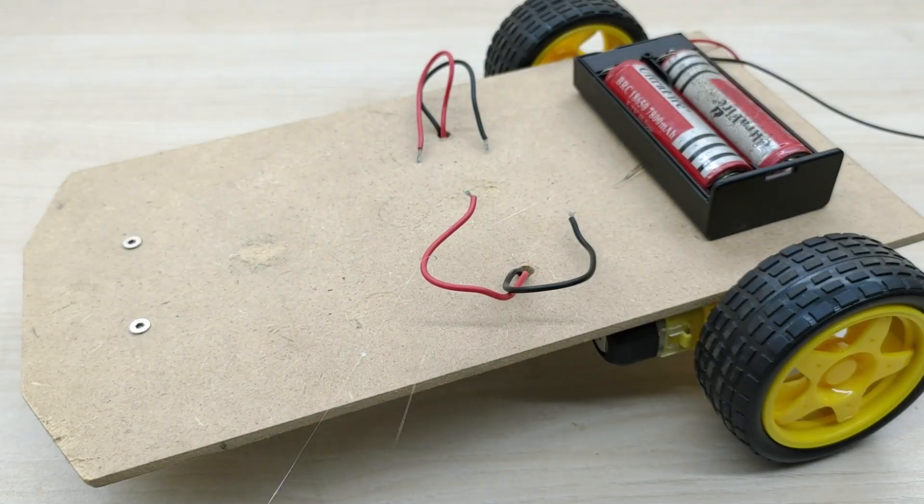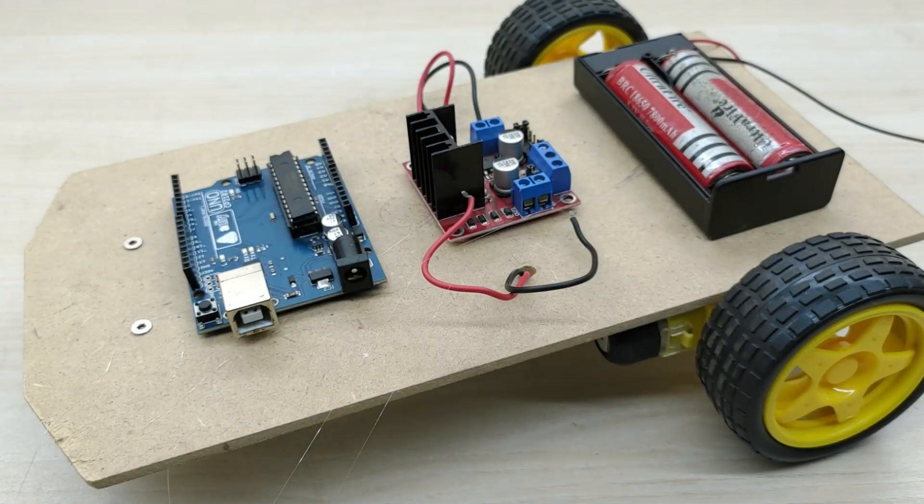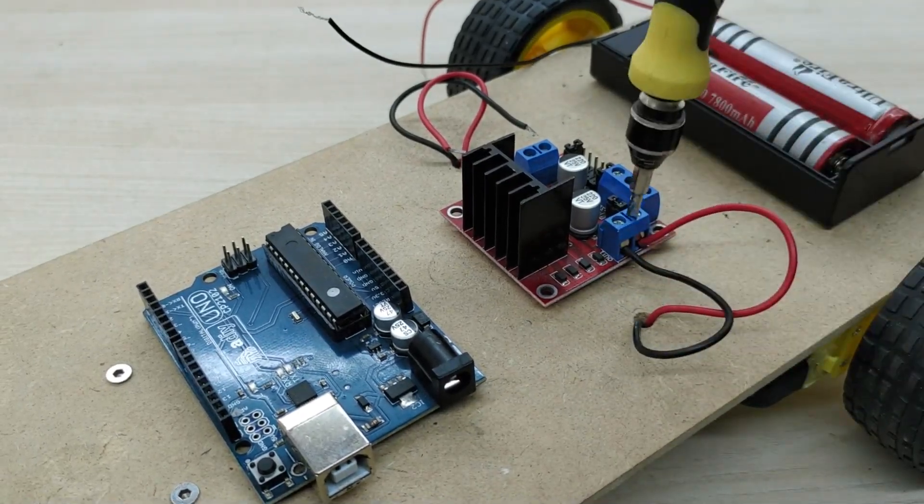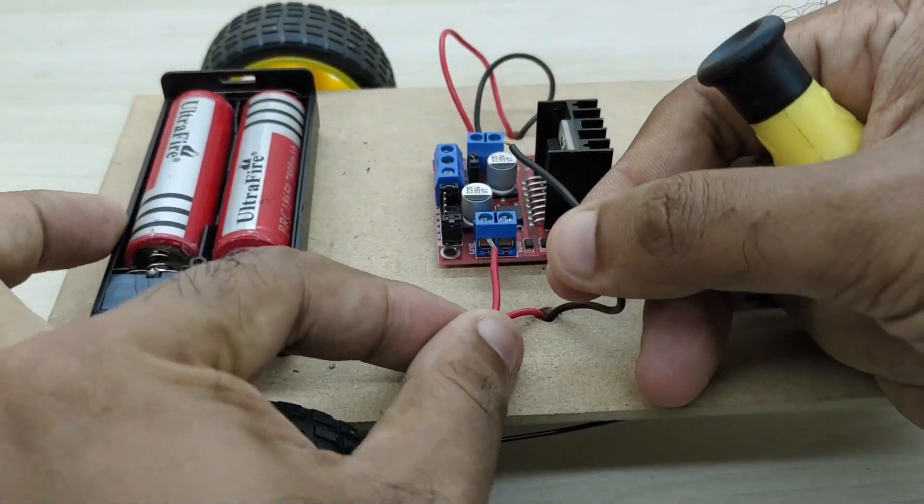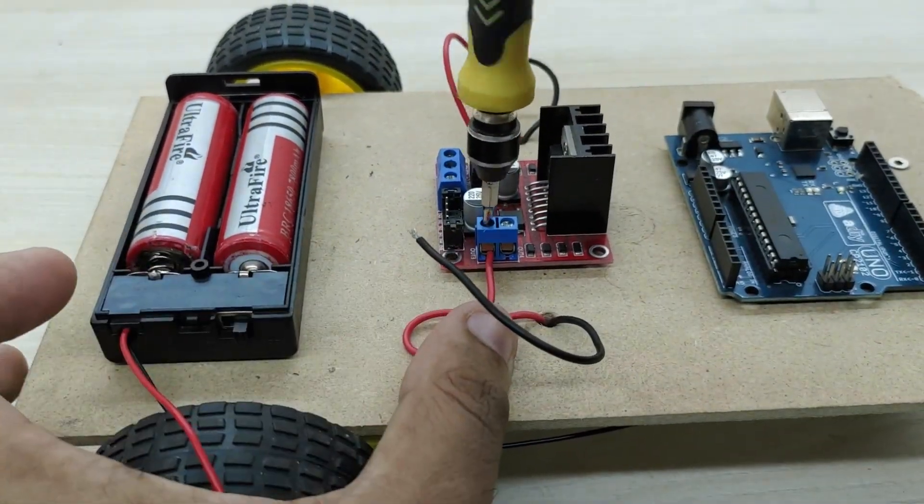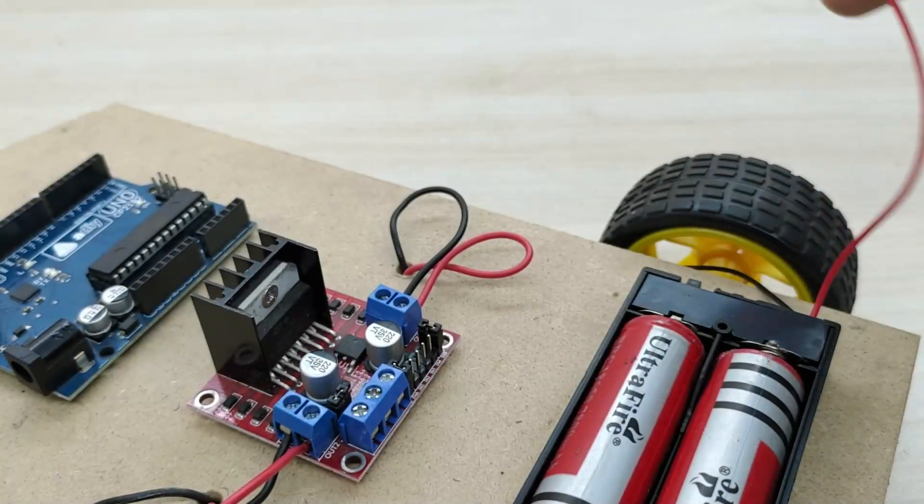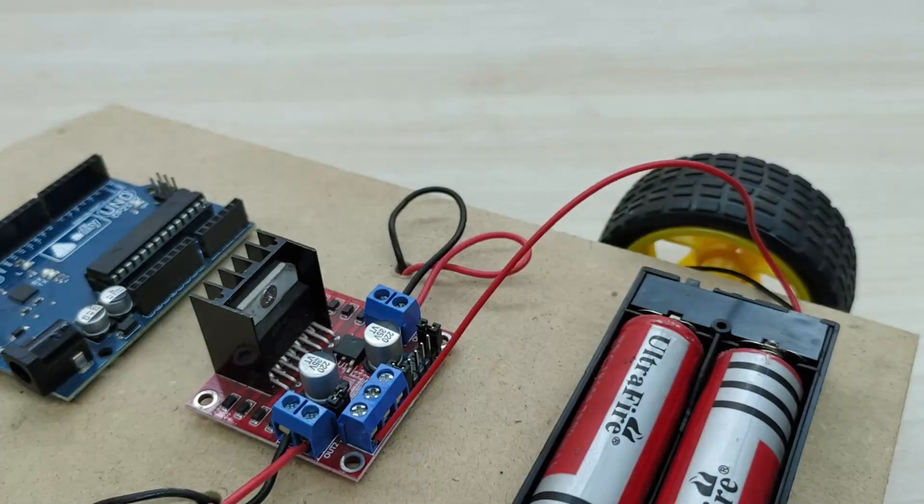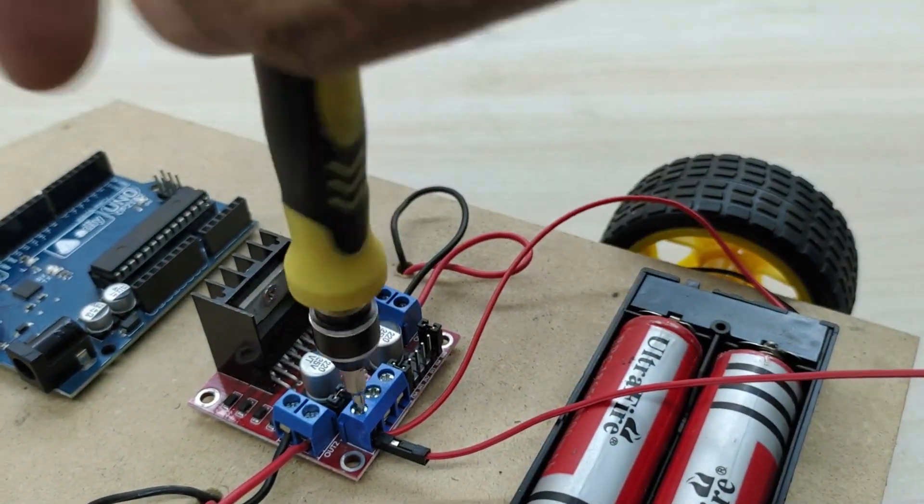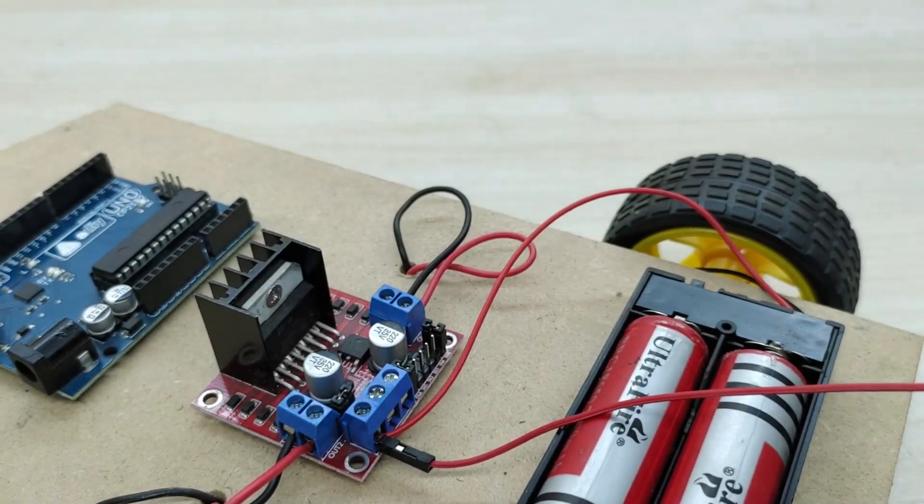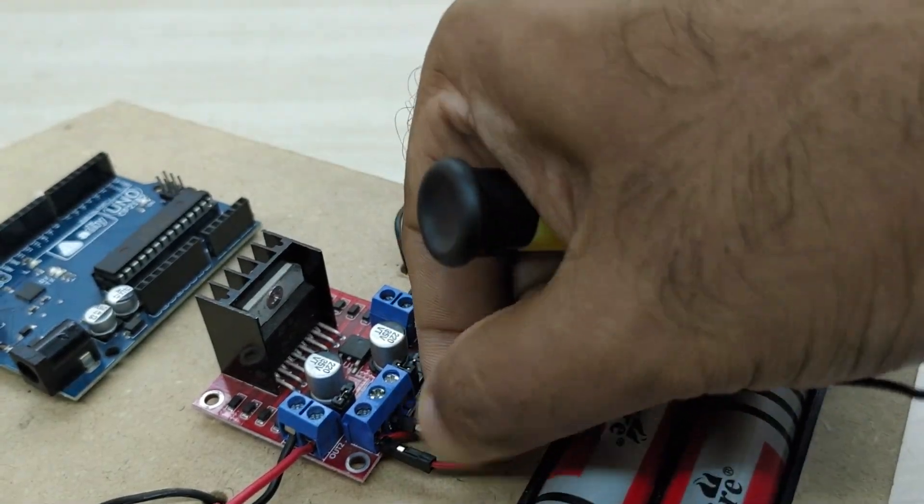Fix all the components as shown in the video. Now, connect the electrical wires from both the motors to the motor driver module as shown. Connect the positive terminal from the motor driver board and negative terminal from the battery to the ground terminal of the motor driver board. Connect two jumper wires also along with it, which will be required for powering the Arduino board.